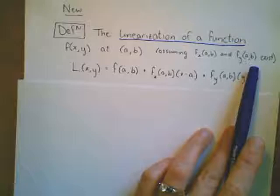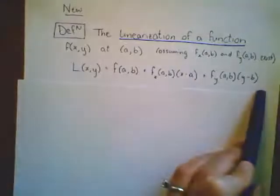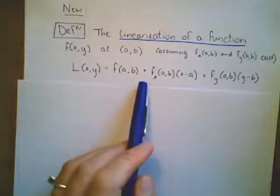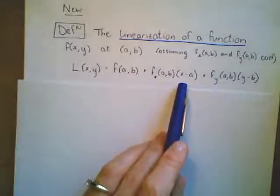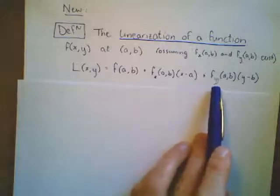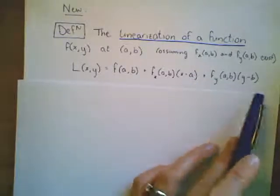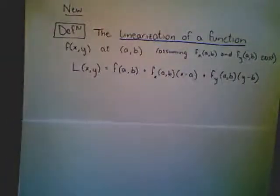So this is a nice review of the 14.3 material of partial derivatives. The linearization is given by this long, messy thing: l of xy is equal to f of ab plus f sub x of ab times x minus a plus f sub y of ab times y minus b. Let's break it down piece by piece and talk about what each of these pieces are.